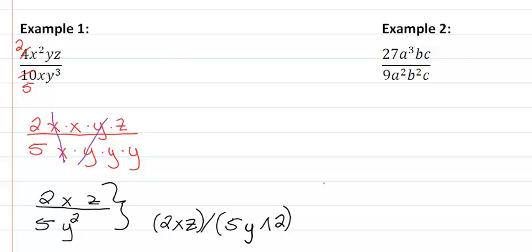Let's look at example 2. In example 2, when I look at the numbers, I notice that they have a 9 in common. 27 divided by 9 is 3, and 9 divided by 9 is 1.